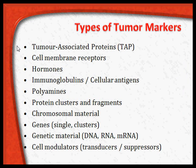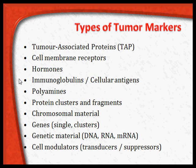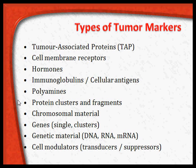The types of tumor markers include tumor-associated proteins (TAP), cell membrane receptors of tumor cells, hormones secreted in excess due to uncontrolled tumor growth, immunoglobulins, cellular antigens presented by tumors, polyamines, protein clusters synthesized by abnormal cells during multiplication, protein fragments, and sometimes chromosomal material of oncogenes or the oncogenes themselves causing different cancers.